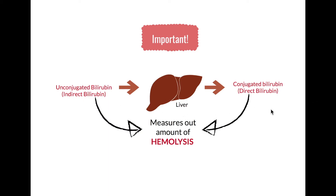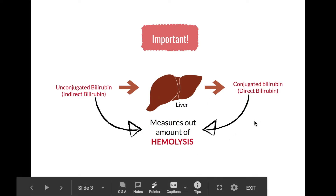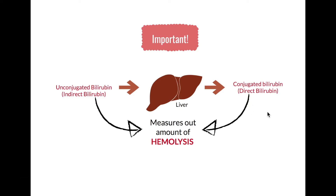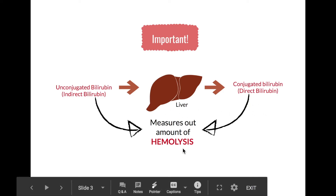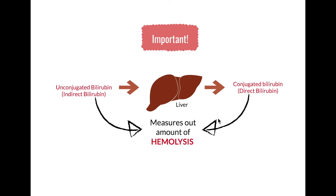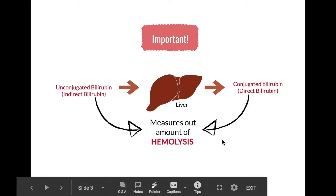These are important because they indicate the amount of hemolysis. Doctors can order direct bilirubin as a test to get an idea of the amount of hemolysis going on in a patient. That's an important clinical chemistry concept you should remember.